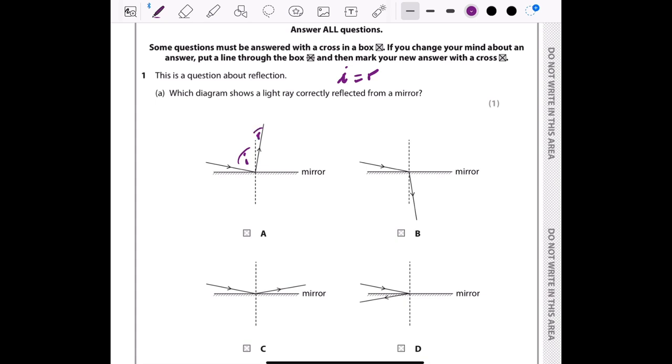So this diagram is not correct—diagram A. For diagram B, this one is the angle of incidence, but here the reflected ray went through the mirror, and this is wrong as well.